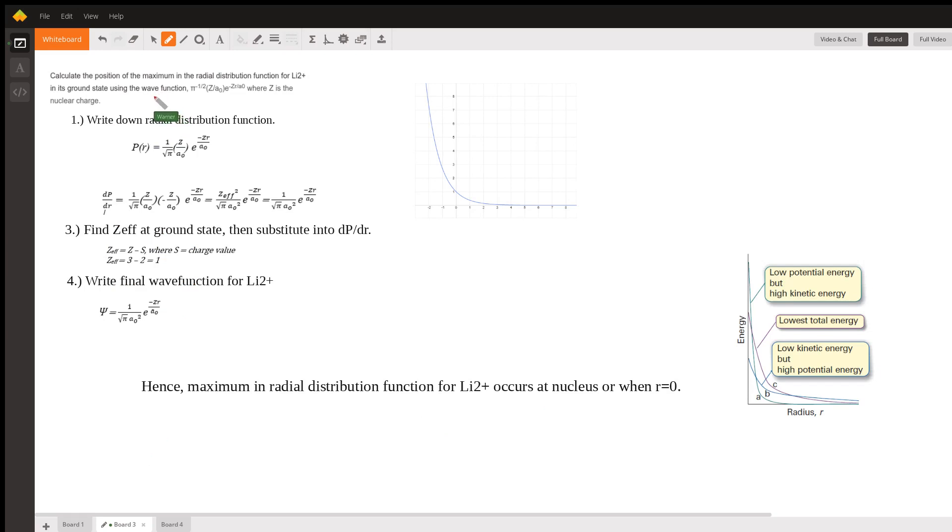So we need to write down the radial distribution function. As we said earlier, it's the same thing as a probability density function. So we just set it PR is equal to whatever it's given.